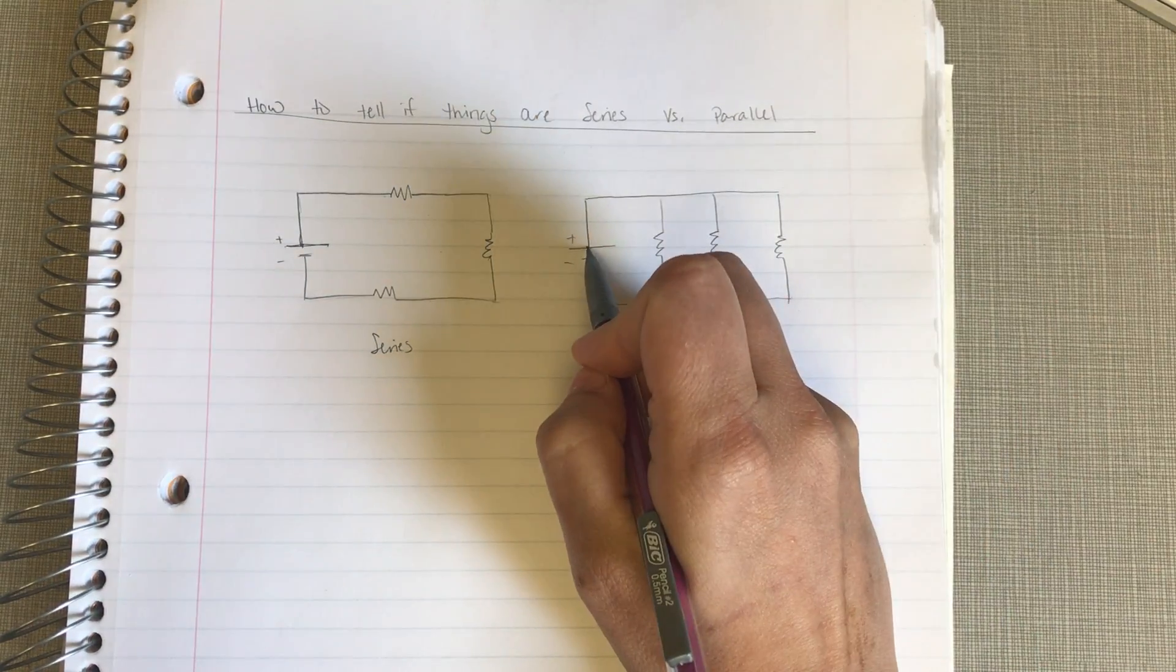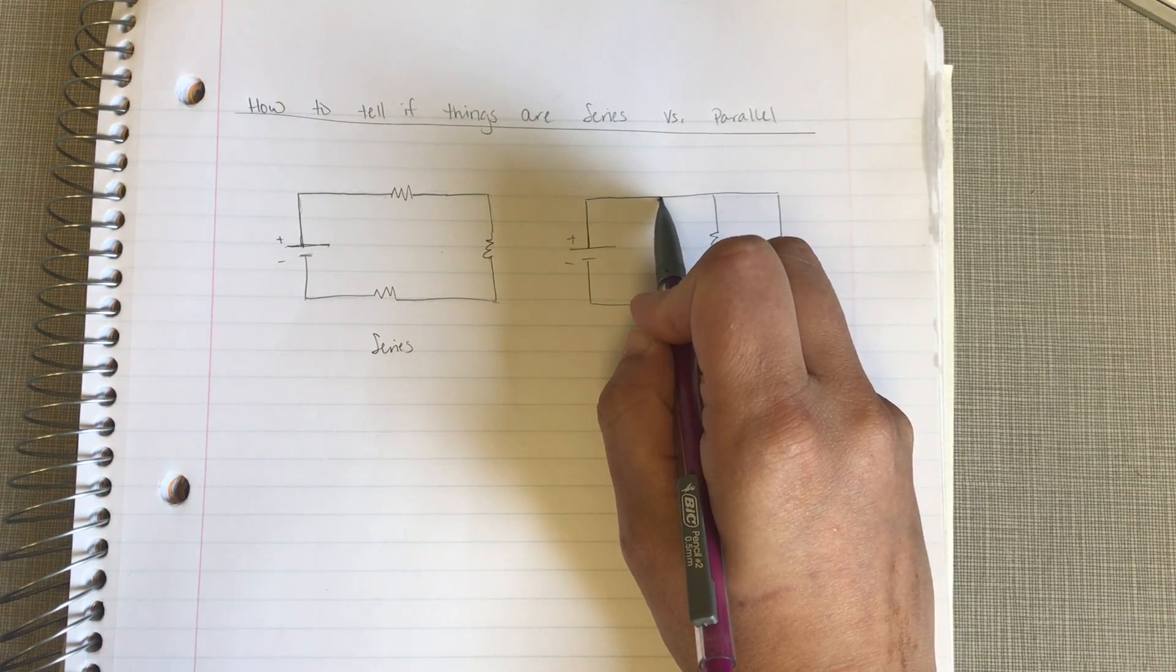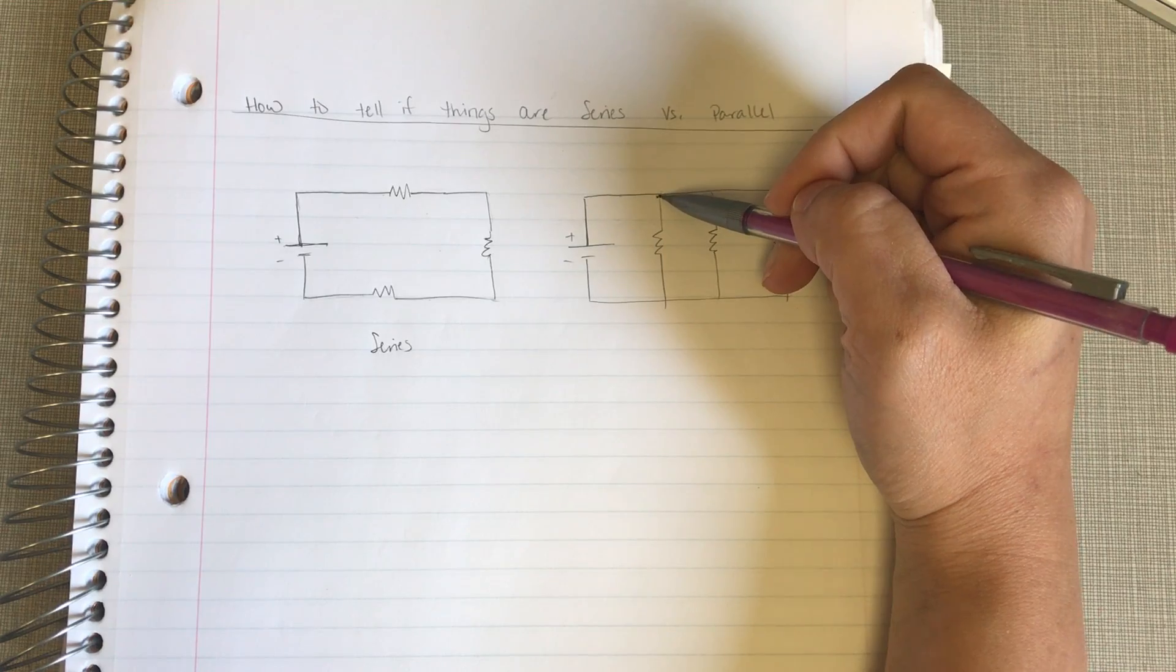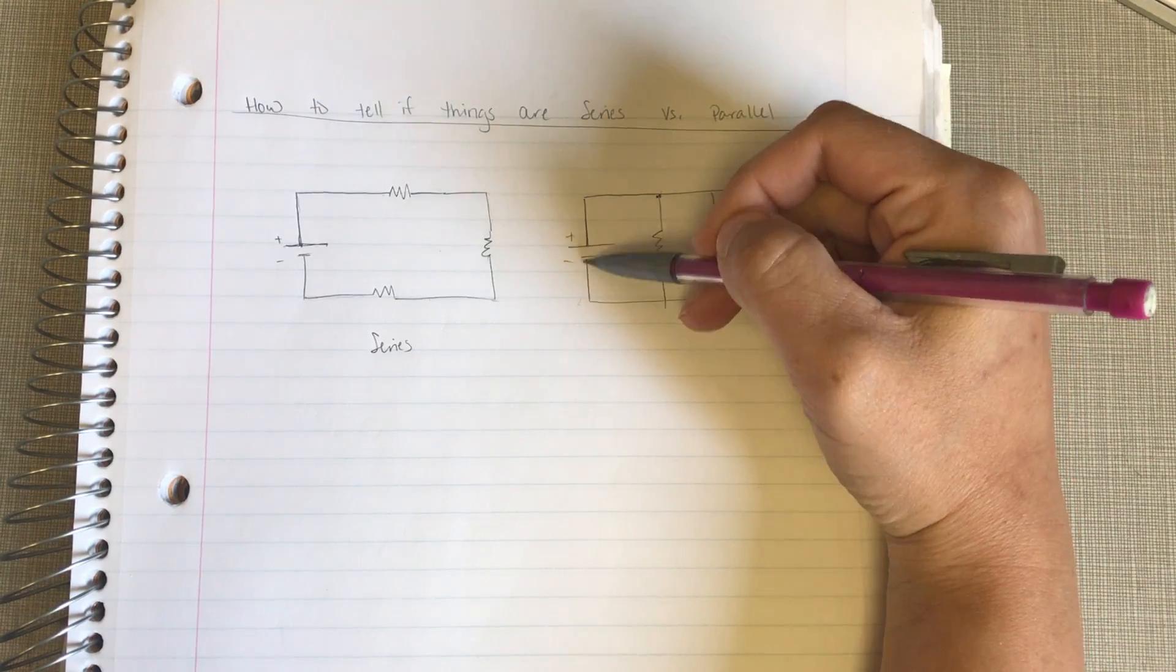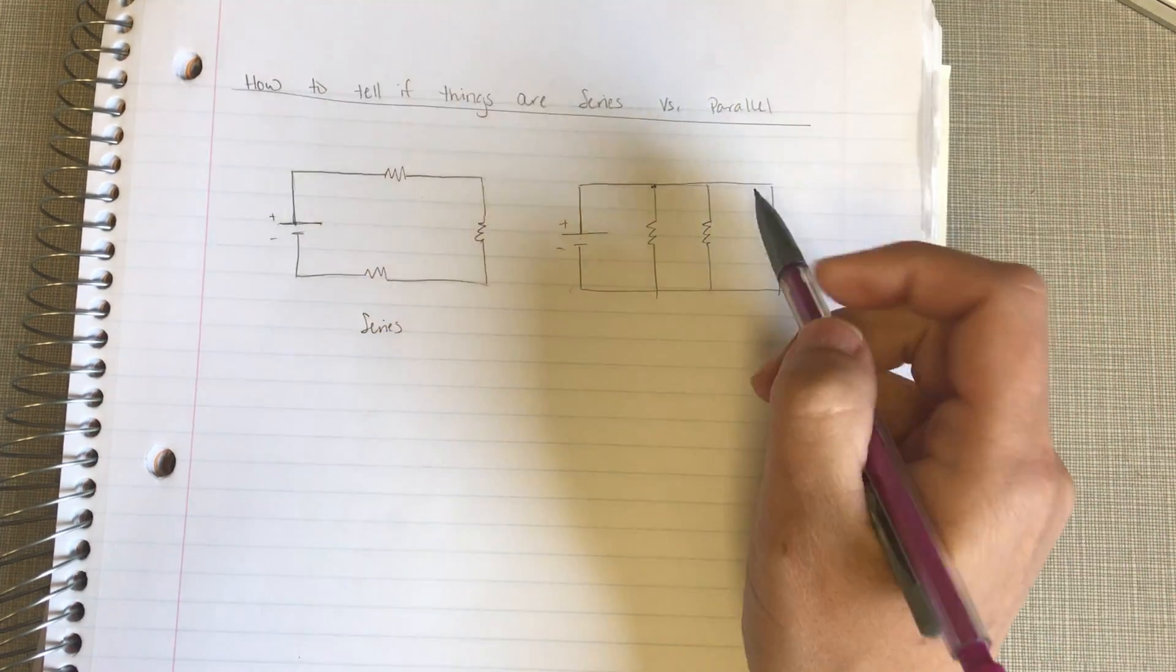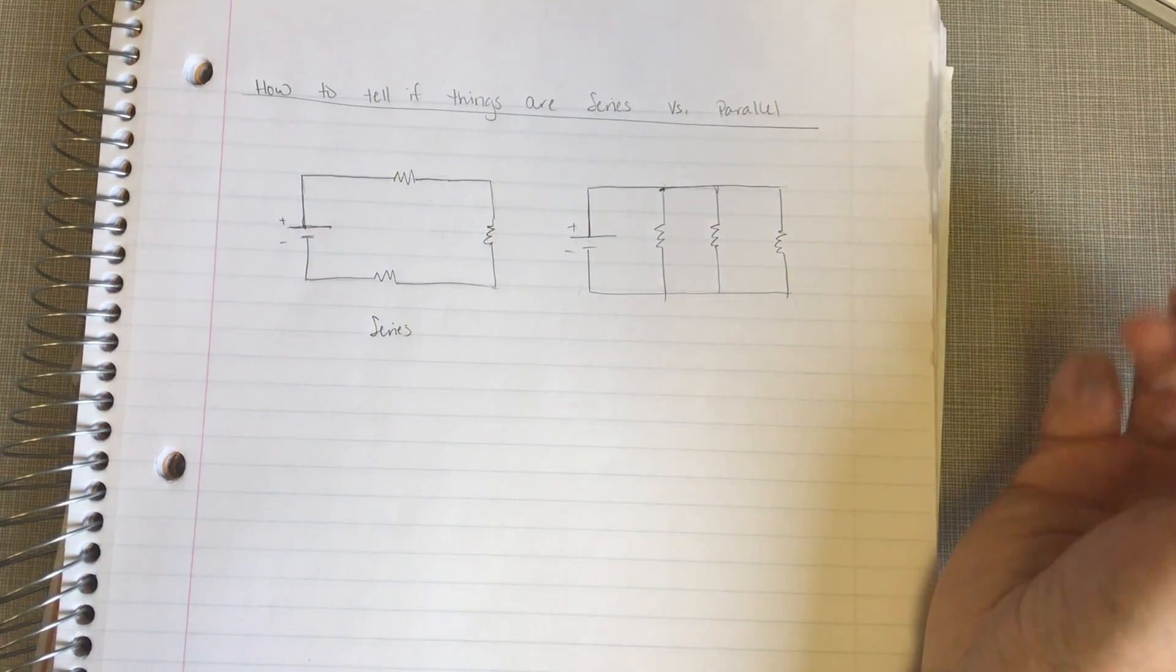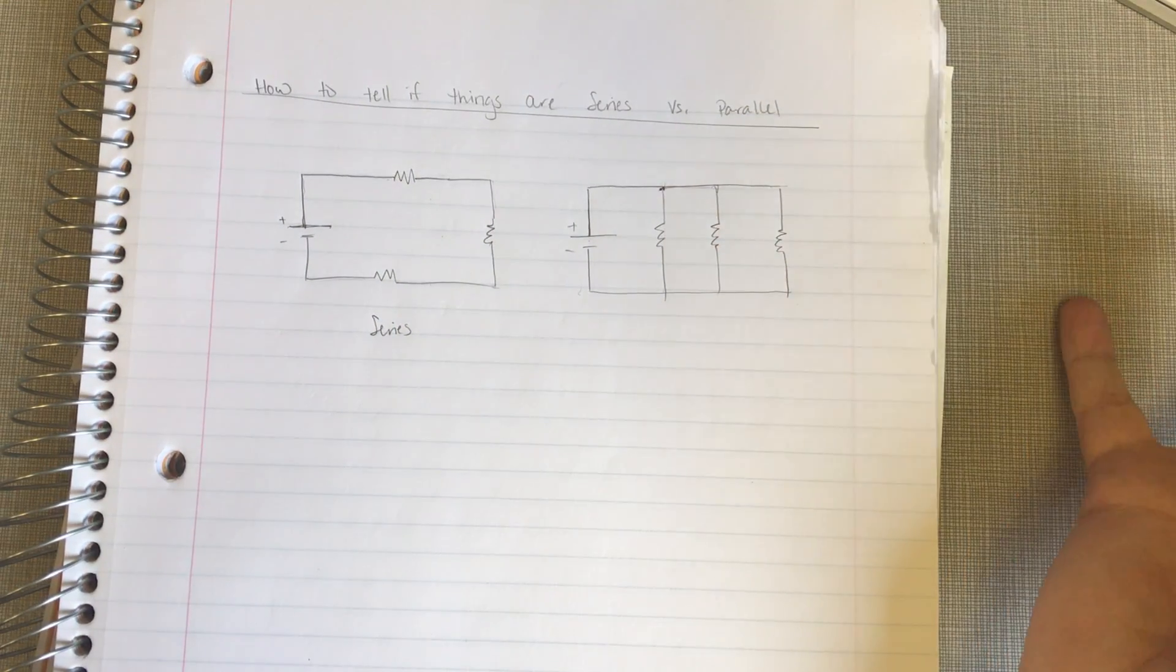This one, our current comes out, gets to here. When it gets to here, now it has a choice. It can either go through this branch to get back to the negative, or it can keep going. So, when current has a choice, that's when you start saying, okay, some things are going to be in parallel.